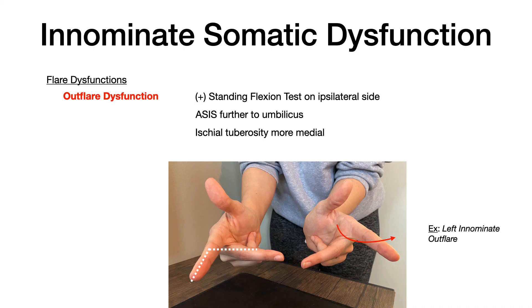To recap innominate somatic dysfunction: rotations have one side moving forward or backward; shears have one side moving completely superior or inferior; and flares have an in flare moving medially and an out flare moving laterally. Remember your landmarks, use your hands, and you'll get 100% of these questions right.